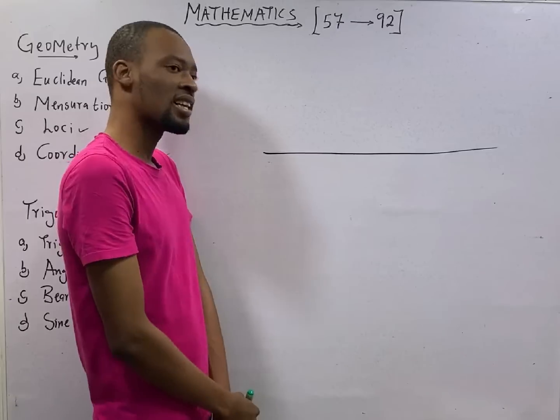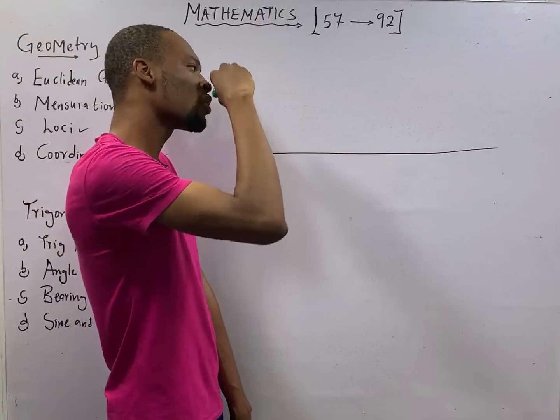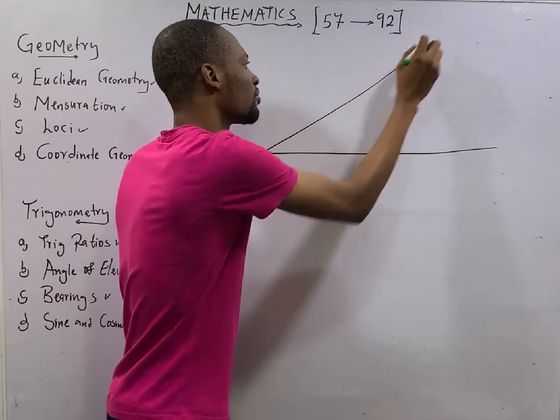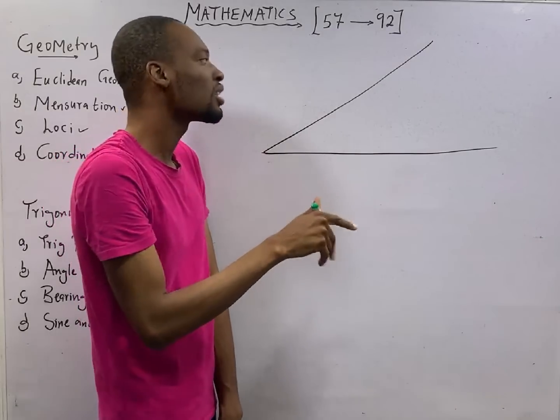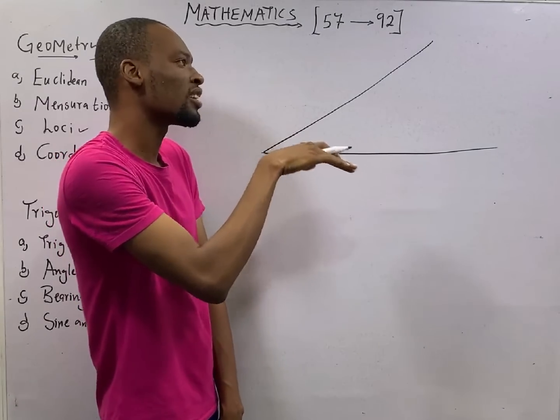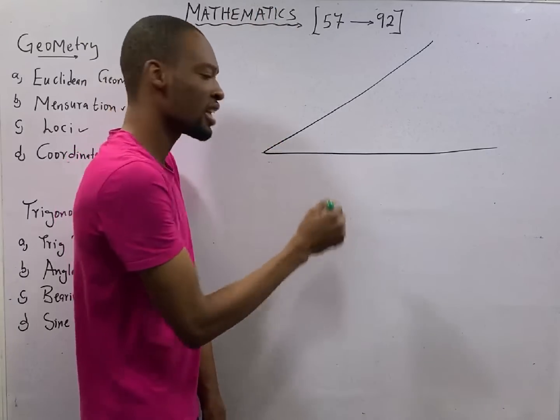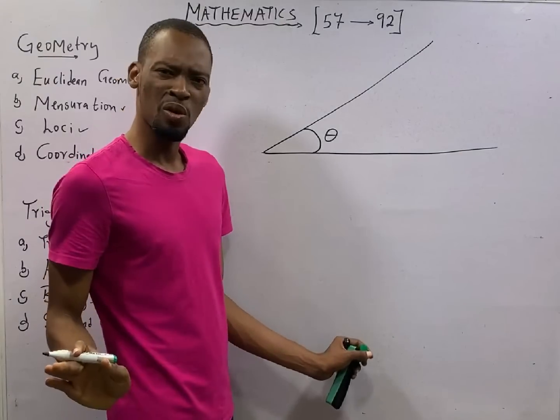If from this horizontal, I decide to look up, it means my angle has increased. That means I have something like this. So the angle between my eye level and the horizontal, like when I look up, the angle between my eye level and the horizontal, this angle is called angle of elevation. That is all.